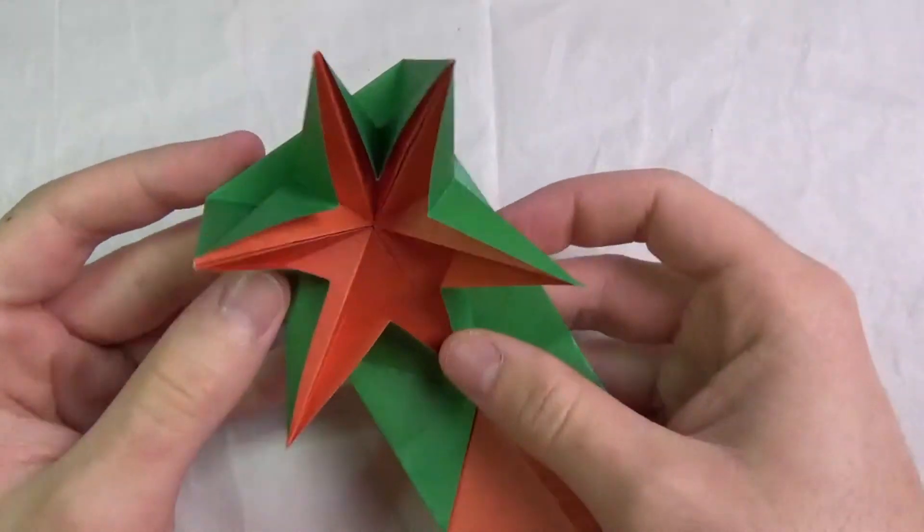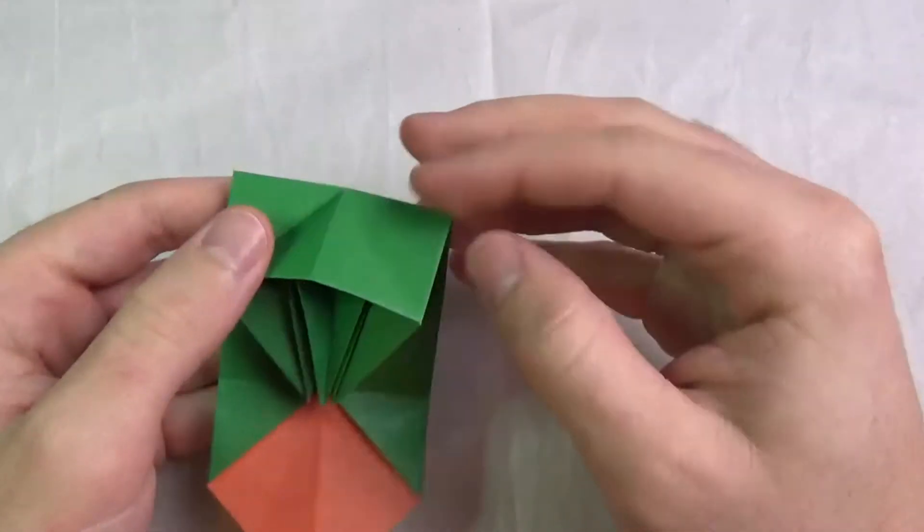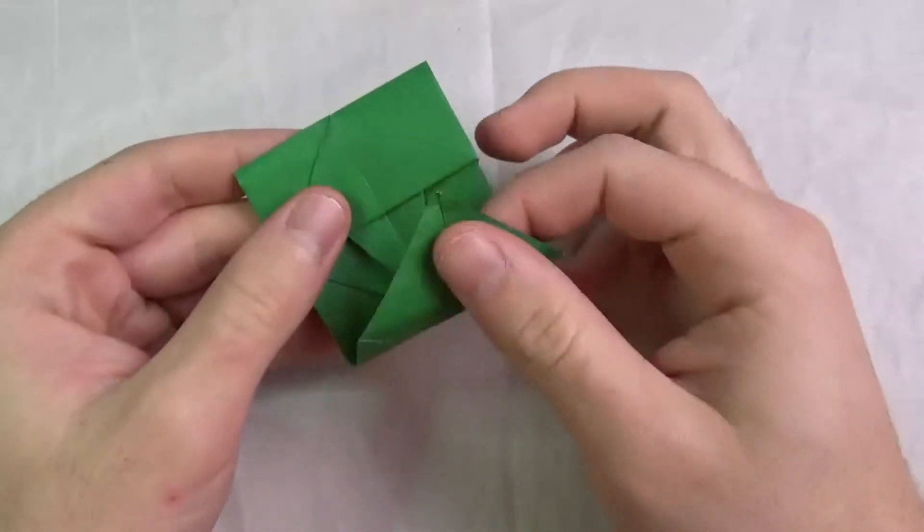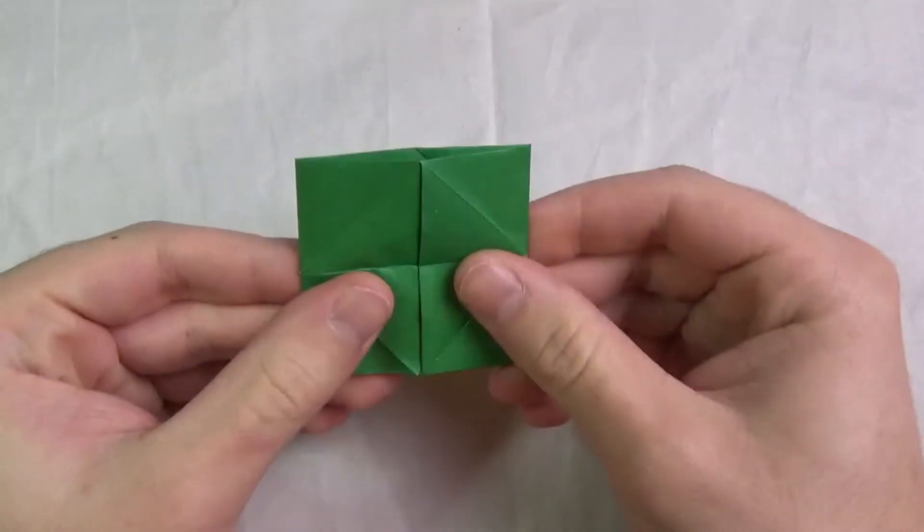And then you can turn it back into the Flicker. Close it up like this and tuck the flap in the pocket. And now you're back to the Flicker.